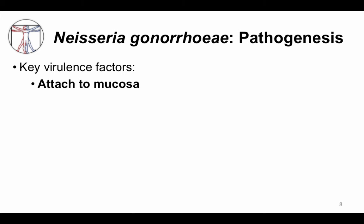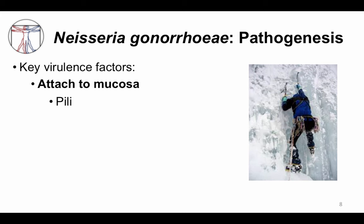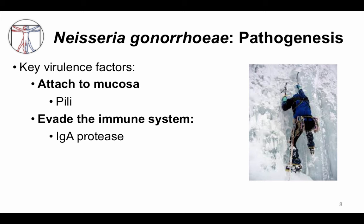Neisseria gonorrhea is really effective at attaching to the genitourinary mucosa. Its primary virulence factor is pili, analogous to an ice climber using picks to stick to an ice wall and not let go. It also evades the immune system through IgA proteases present on GU mucosal surfaces. However, Neisseria gonorrhea does not have a polysaccharide capsule, in contrast to Neisseria meningitidis.